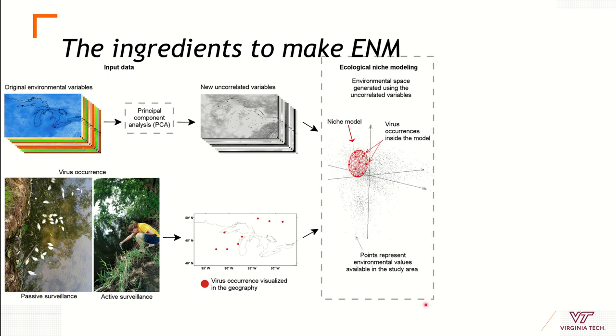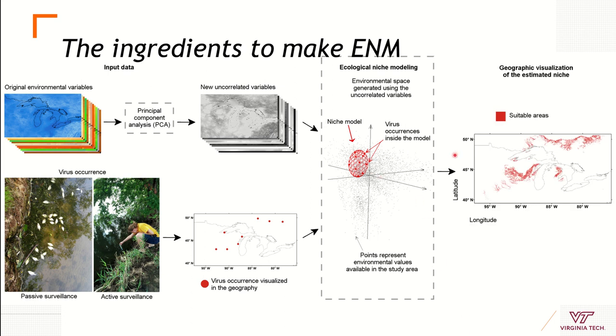Then we run the analysis using a statistical or mathematical algorithm in which, using the points you can see here inside, we try to reconstruct the ecological niche of my pathogen or my vector or my reservoir to identify those consistent environmental conditions where we have transmission. Then we project that model into geography to have the maps of potential transmission.